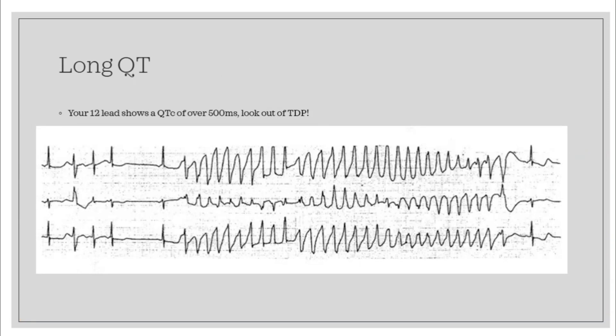Now we're going to be talking about long QT. Long QT can be diagnosed on a 12-lead as a QTc over 500 milliseconds. Long QT can be caused by several different conditions. The genetic one is long QT syndrome. Patients with long QT are prone to recurrent syncopal episodes secondary to torsades de pointes and to sudden cardiac arrest deaths secondary to TDP degenerating into ventricular fibrillation.